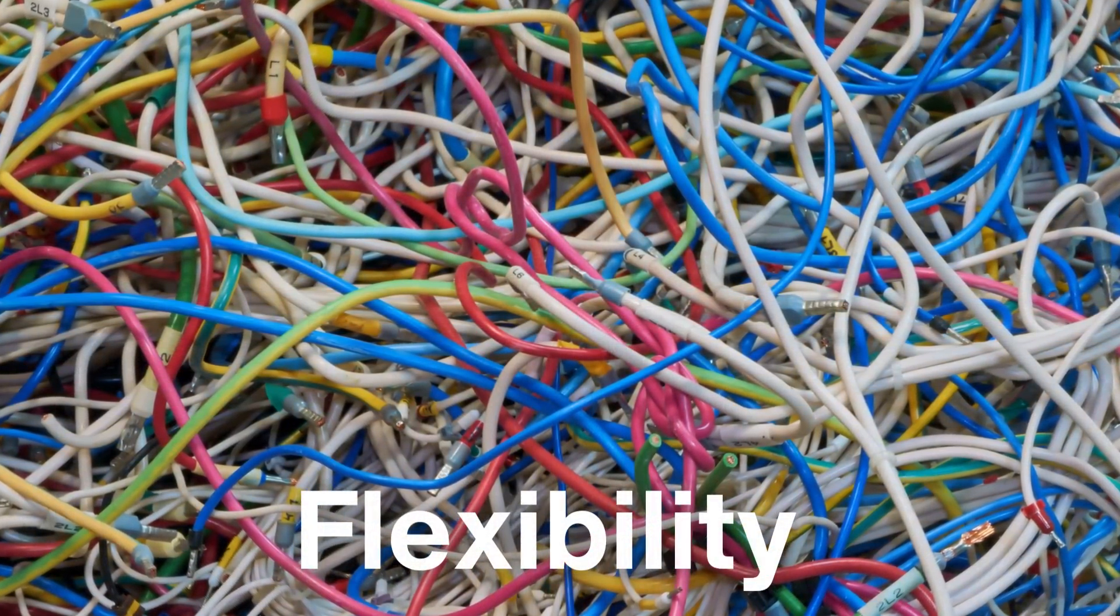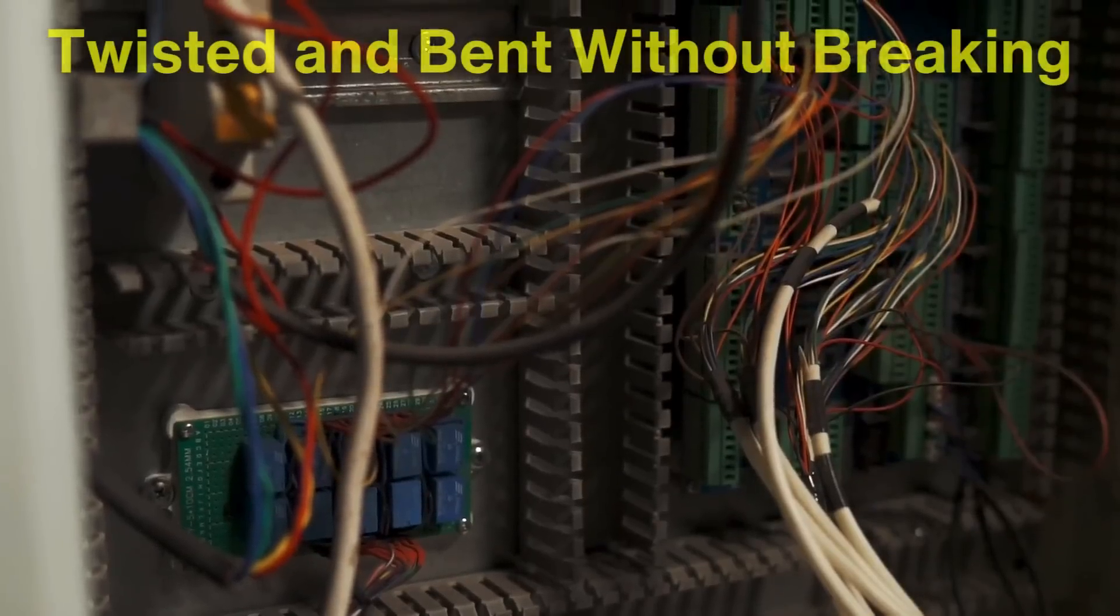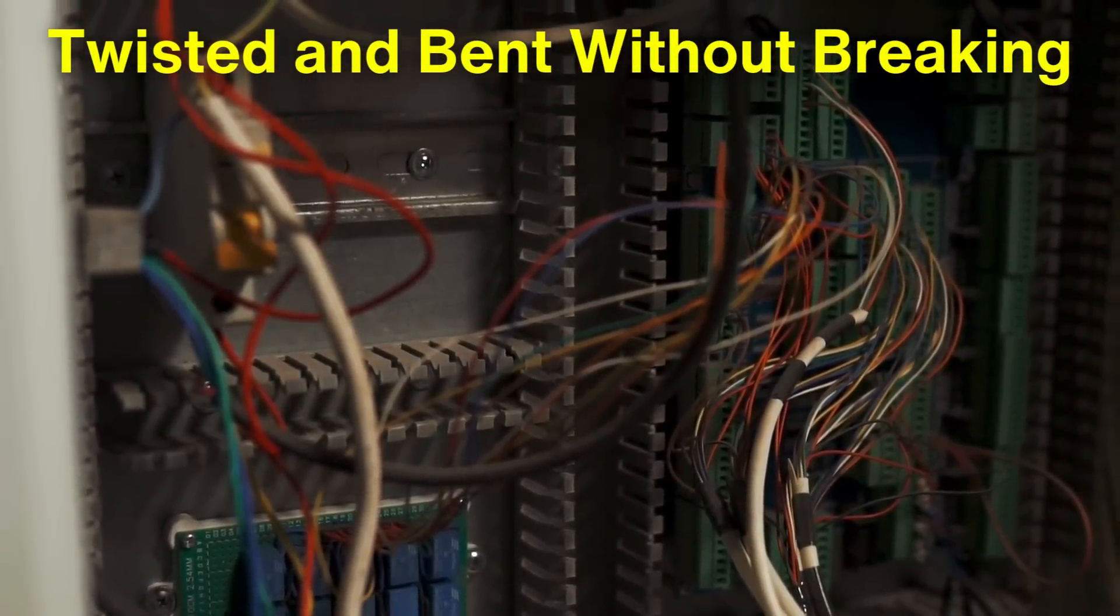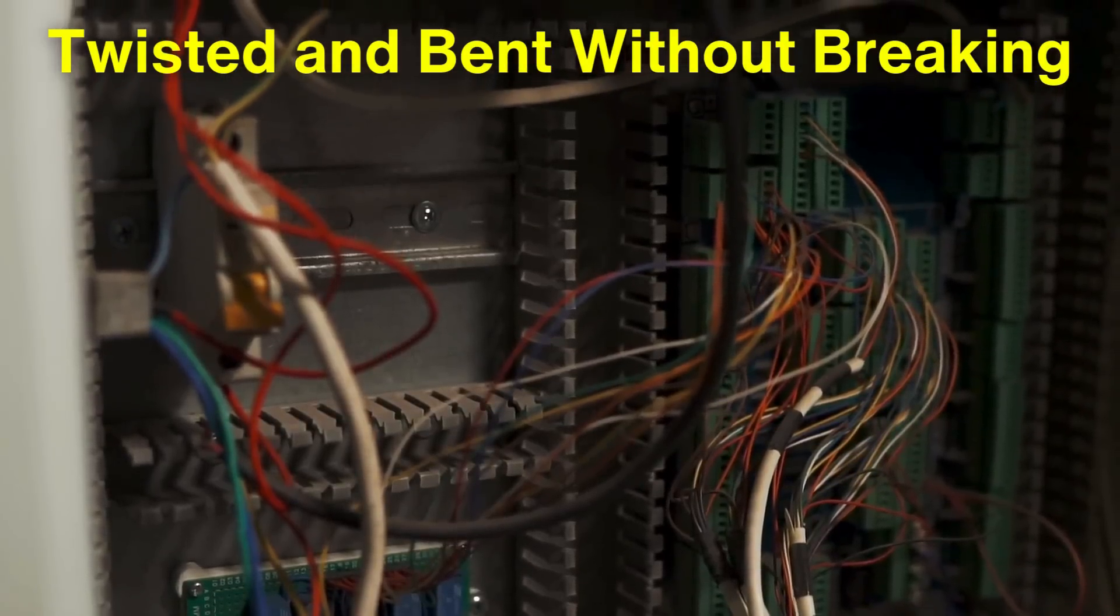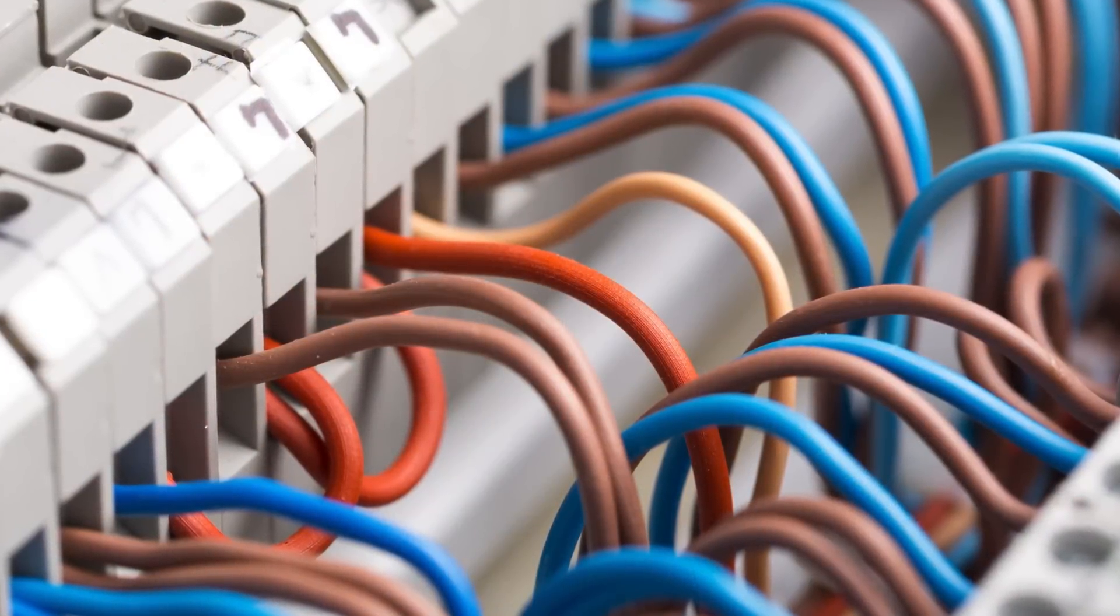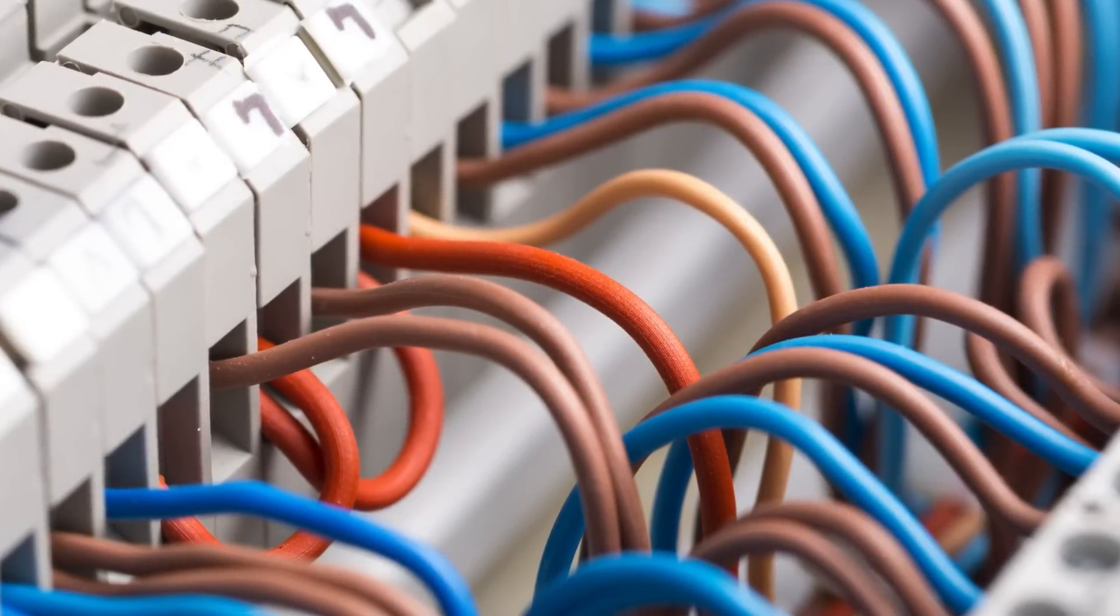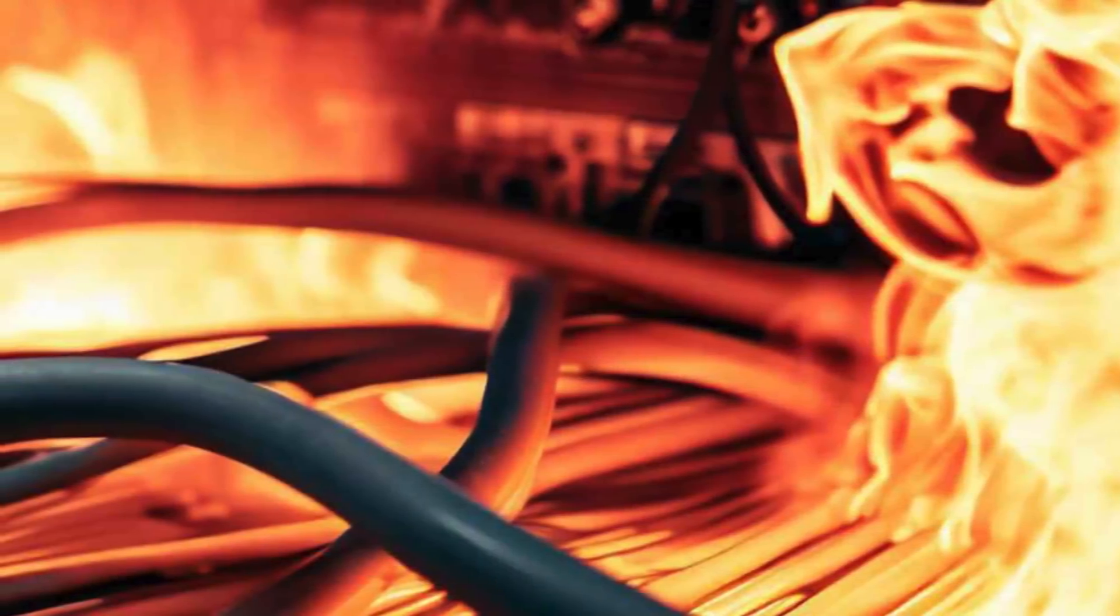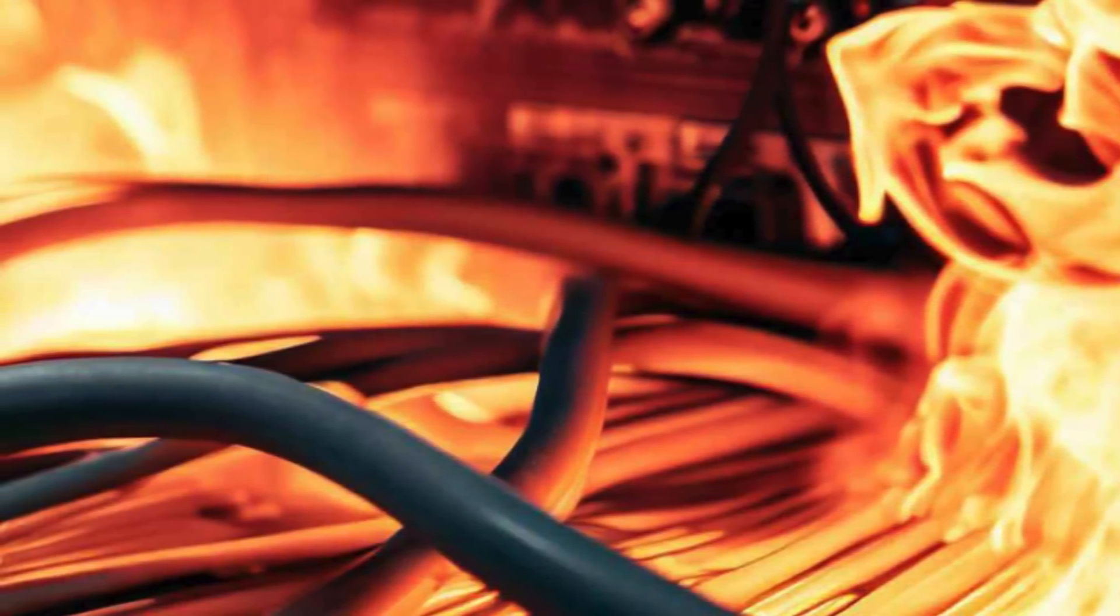Additionally, copper's flexibility is a significant advantage. It can be twisted and bent without breaking, making it easier for electricians to work with and install, especially in complex or confined spaces. This flexibility, combined with its mechanical strength, minimizes the risk of wires snapping or fraying, which could lead to dangerous electrical faults or even fires.